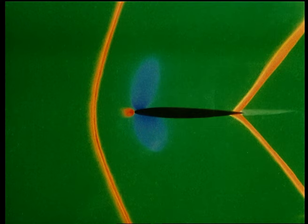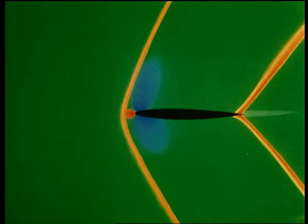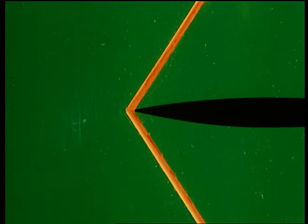As the speed continues to increase, the shocks bend back still further. At a high enough Mach number, provided the leading edge is sharp, the bow wave attaches to it.